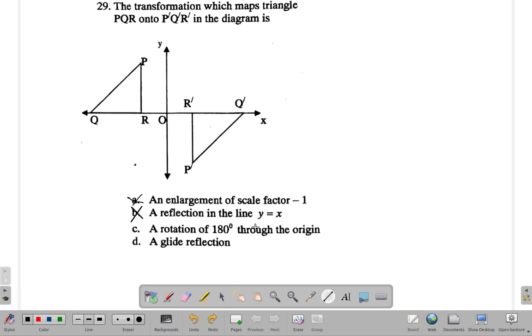A rotation 180 degrees through the origin - it kind of looks like that. Is it a glide reflection? If you glide it over here and then reflect it, then point P would be out at the other end here, not here. But a rotation 180 degrees through the origin, that's possible. Let's see.